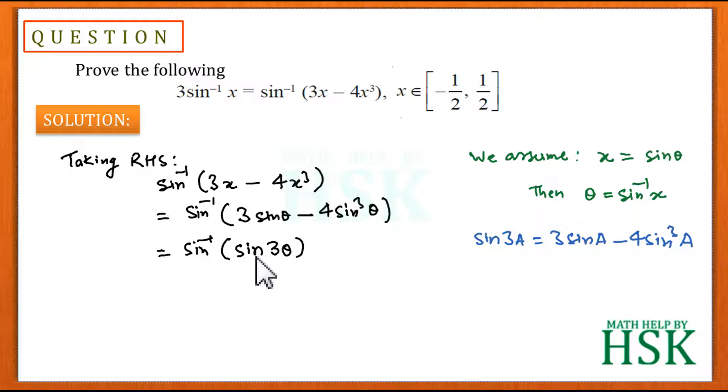sin⁻¹(sin 3θ). Sin⁻¹ and sin are going to cancel, so this gives me 3θ.